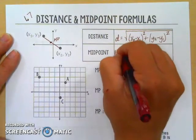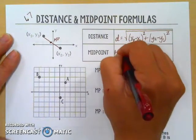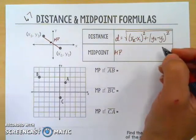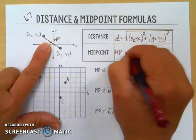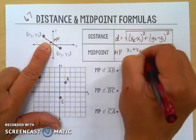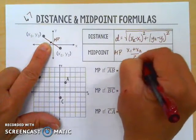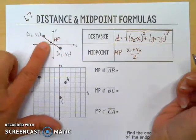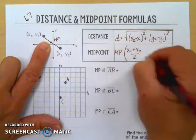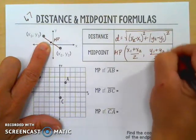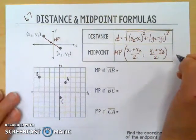For midpoint, again we'll call it MP. It's almost, not quite, but the opposite. We're actually going to add the two x values together and divide by 2. It's like finding the average of the x's to get to the middle, and we'll add the y's and divide by 2 to find the average of the y's.